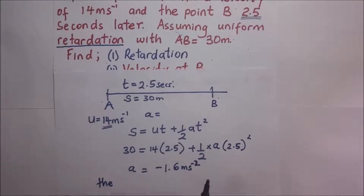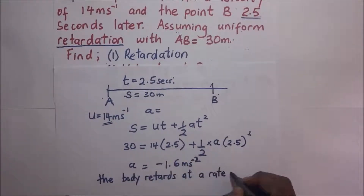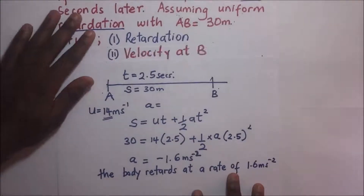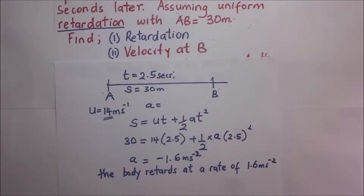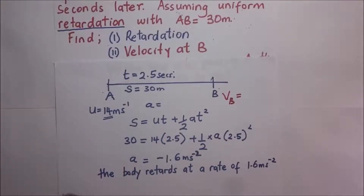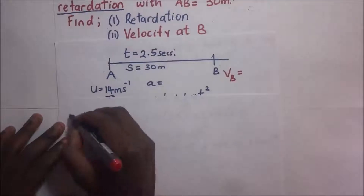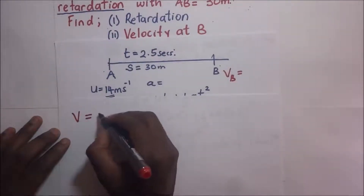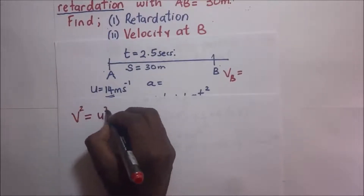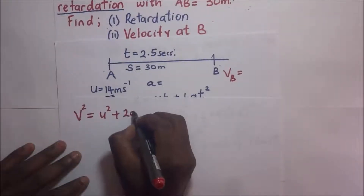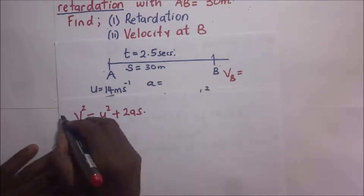For part (ii), they want us to find the velocity at B. We do not know the velocity at B, so we'll go ahead and calculate it using one of our equations of motion. We shall use: v² = u² + 2as.